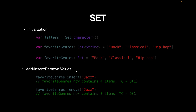To insert a new value into a Set, use the insert function. For example, inserting "Jazz" now gives the set four items. The insert function takes O(1) time complexity because Set conforms to the hashable protocol and is an unordered collection — we don't care where the new value is placed. Similarly, to remove an item from a Set, use the remove function, which is also O(1) time complexity.